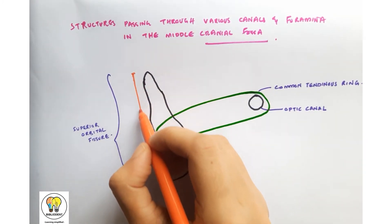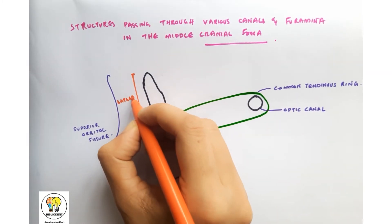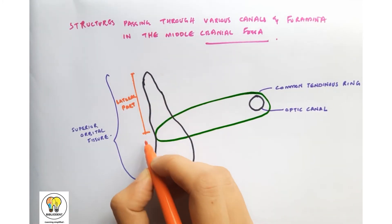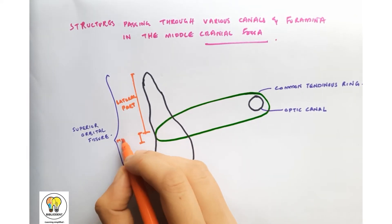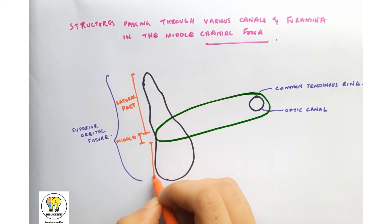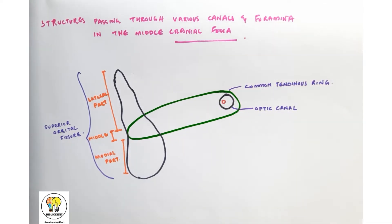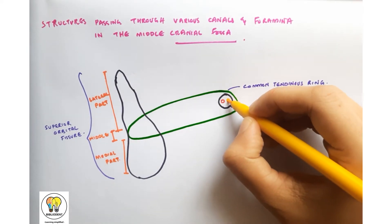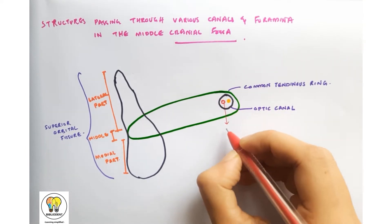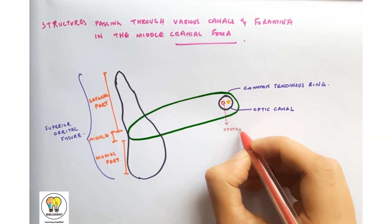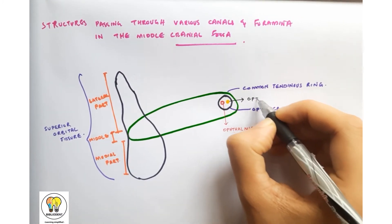The common tendinous ring divides the superior orbital fissure into three parts: the portion above the ring is the lateral part, the portion within the ring is the middle part, and the portion below the ring is the medial part. The optic canal transmits two structures into the orbit: the ophthalmic artery and the optic nerve, which is the second cranial nerve.